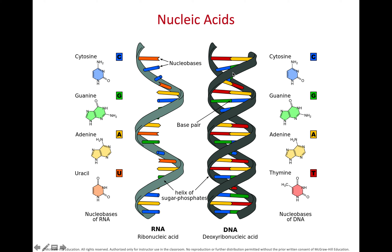RNA is single-stranded and is made of guanine, cytosine, adenine, and uracil — with special emphasis on uracil. DNA is double-stranded and contains cytosine, guanine, adenine, and thymine. In RNA there is uracil; in DNA there is thymine. Using base pairing rules: in DNA, adenine pairs with thymine and cytosine pairs with guanine. In RNA, cytosine pairs with guanine and adenine pairs with uracil.